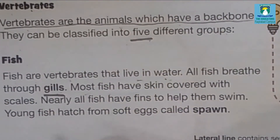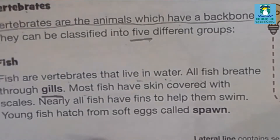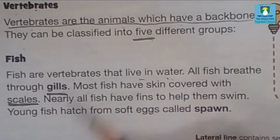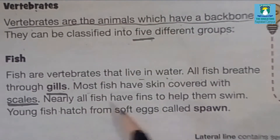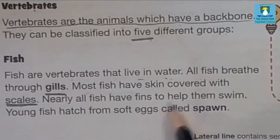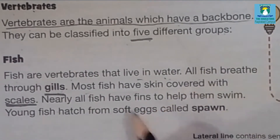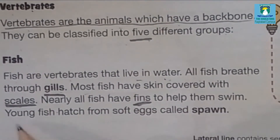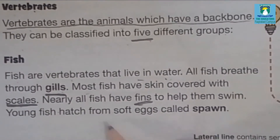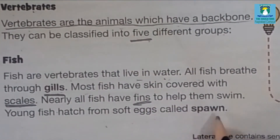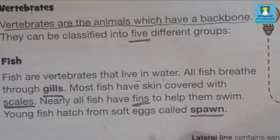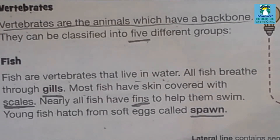Most of the fish's skin is covered with scales. Underline these words. Nearly all fish have fins to help them swim — fins help in movement. Young fish hatch from soft eggs called spawn. Spawn are soft eggs from which young fish hatch.